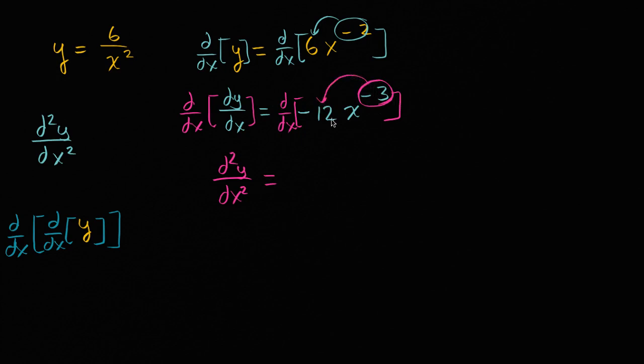Negative 3 times negative 12 is positive 36 times x to the, well negative 3 minus 1 is negative 4 power. Which we could also write as 36 over x to the fourth power. And we're done.